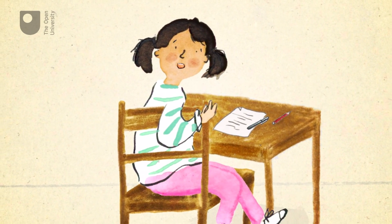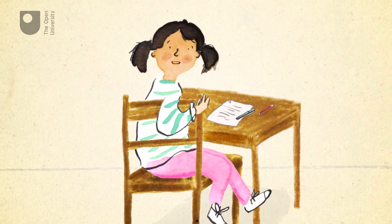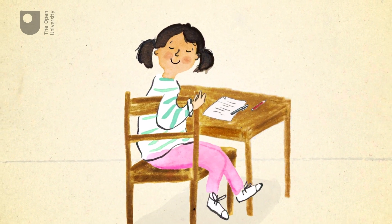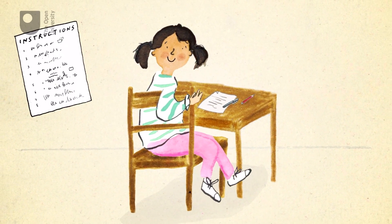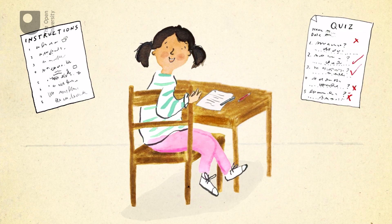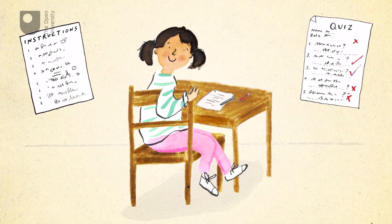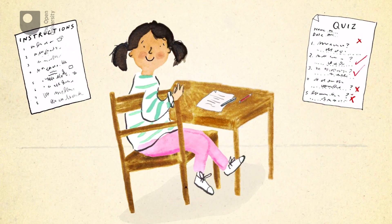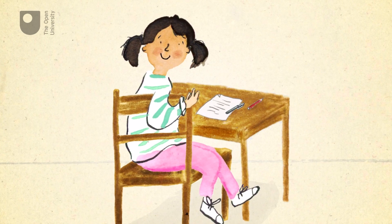Children with ADHD may be easily distracted, struggle to follow instructions and might make careless mistakes in their school work. They can be impulsive and may not consider the risks of their behaviour.